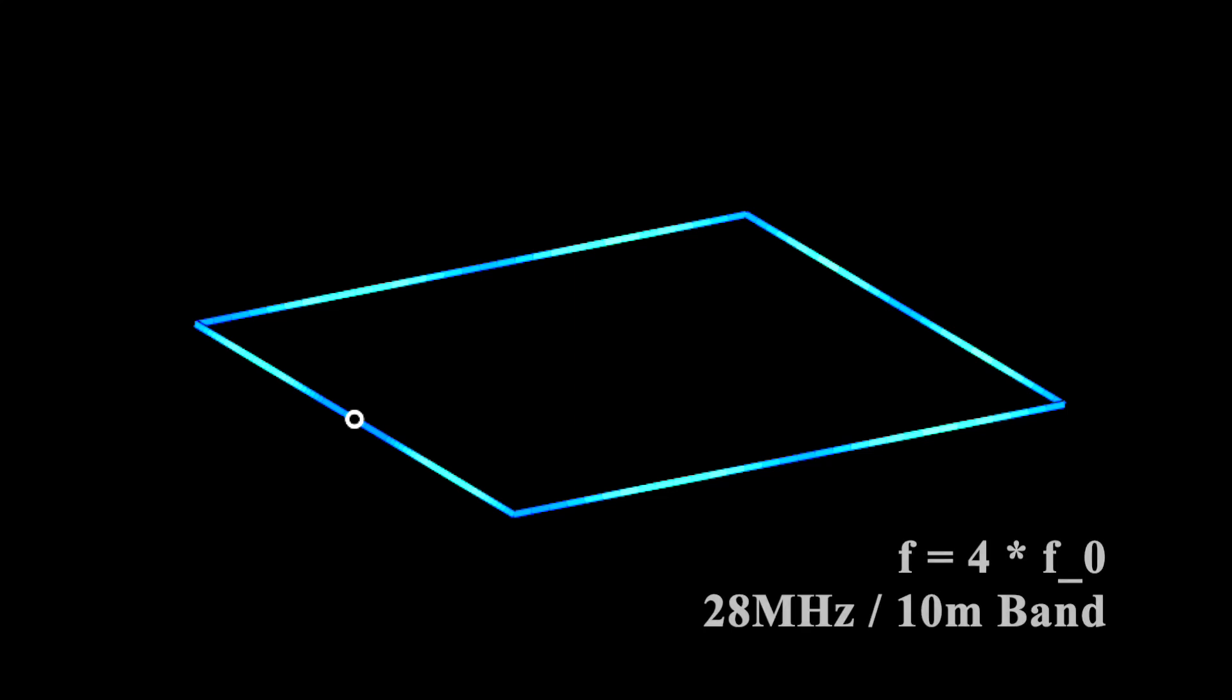With 10m side lengths, the quadratic loop is covering an area of 100 m². That is quite large, and you certainly cannot build it up just everywhere you want.